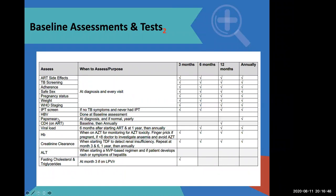A pap smear — she's female, so if she's not pregnant we do it; if she's pregnant, we prefer to do it six weeks after delivery. A baseline CD4 count — patients get only two CD4 counts: baseline and at one year. A viral load — we don't do a baseline viral load. The first viral load is done six months after the patient has started ARVs.